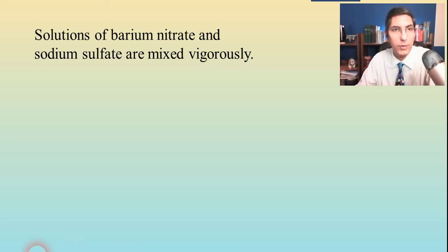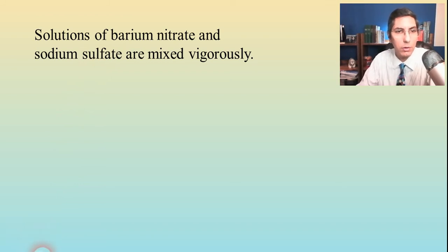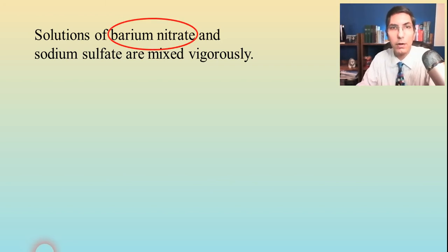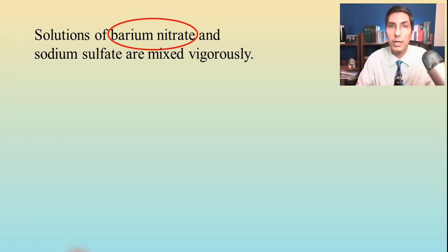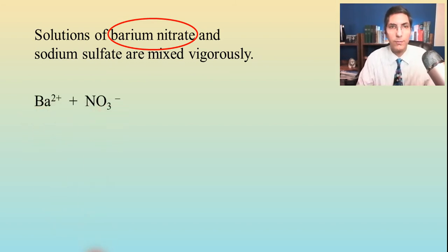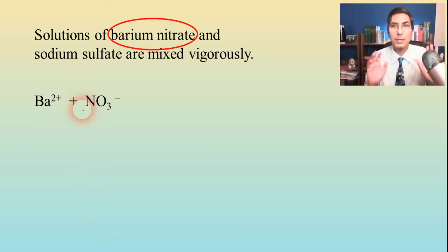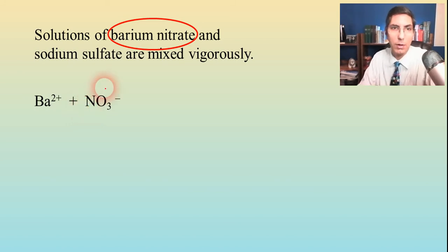Here's our first reaction. It tells us that solutions of barium nitrate and sodium sulfate are mixed vigorously. The first thing you want to do is write the formulas in their appropriate form. The first one is barium nitrate, and that's a solution — it is soluble — so we're going to write it in its dissociated form: barium ions and nitrate ions. Now there are actually two nitrate ions here, but I'm going to keep this as simple as possible. We'll worry about balancing at the end of the process.